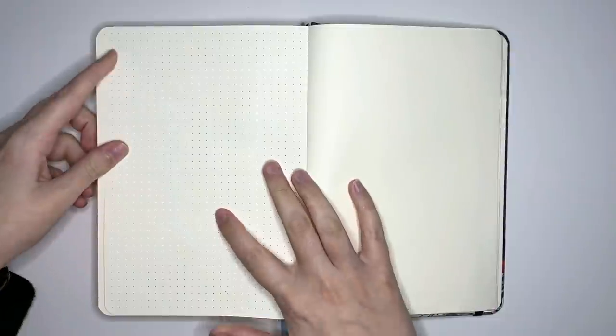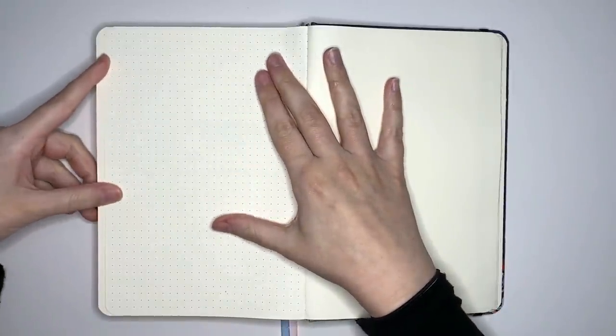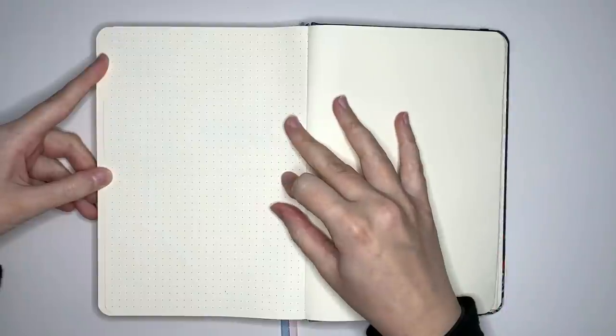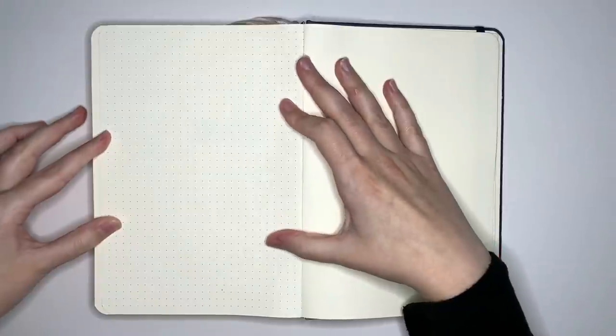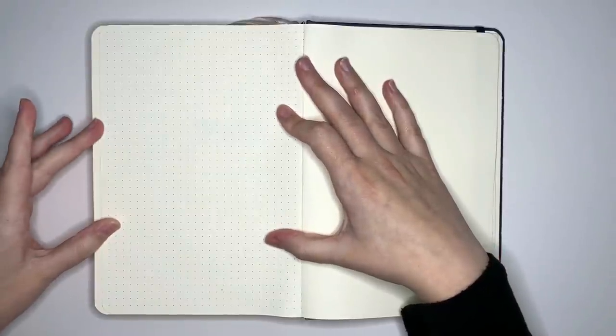So if we flip over and just gently separate these pages or kind of lay them down, there we go, and we can see a very, very faint amount of shadowing. But honestly, once you put more pen down on this page, you wouldn't be able to tell. So really, in terms of shadowing, it's actually not that bad at all.